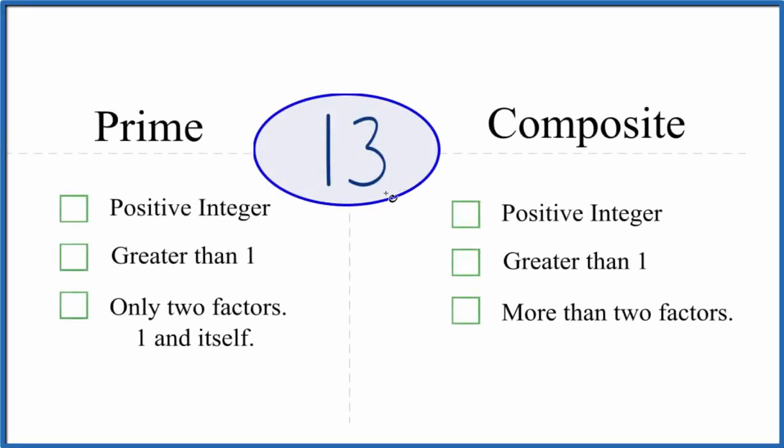So the question is, is 13 a prime number or a composite number? Here's how you can tell. So let's see first, is 13 a prime number?